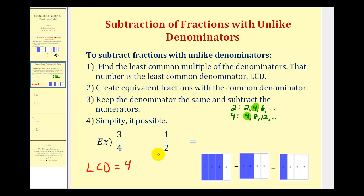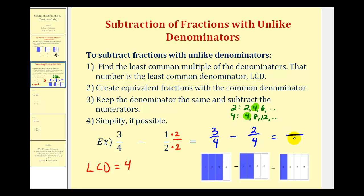So we want both denominators to be equal to four. This denominator is already four. And since two times two is equal to four, we can multiply this denominator by two, as long as we do the same to the numerator — this is like multiplying by two over two, which equals one. So now we have three-fourths minus two-fourths. The denominator stays the same, and we subtract the numerators: three minus two equals one. So our difference is one-fourth, as we see here modeled.